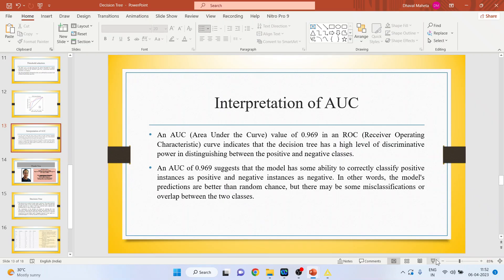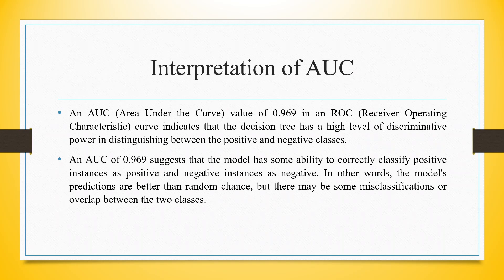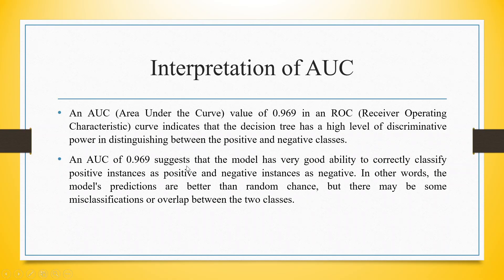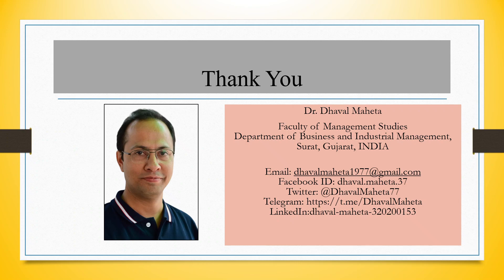An AUC value of 0.969 in a ROC curve indicates that the decision tree has a high level of discriminative power, distinguishing between the positive and negative class. An AUC of 0.969 suggests the model has a very good ability to correctly classify positive instances as positive and negative instances as negative. In other words, the model predictions are better than random chance, though there may be some misclassifications or overlap between the two classes. For more videos on KNIME, please subscribe to my channel, follow me on LinkedIn and Twitter, and refer to my playlist. Thanks.